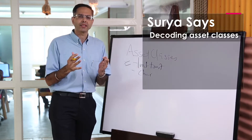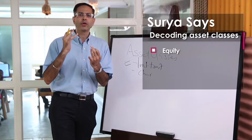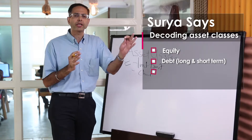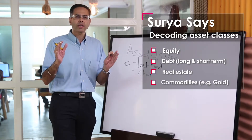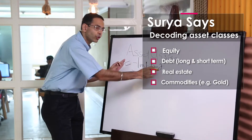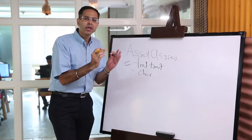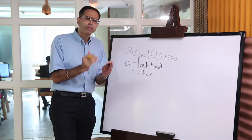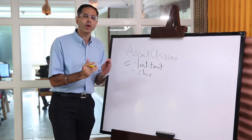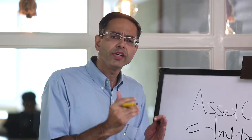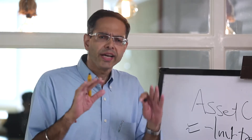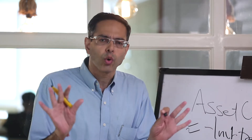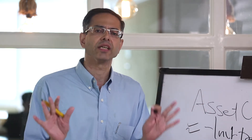So what are those asset classes? It could be equity, it could be debt. Within debt, you can actually further divide into short term and long term bonds, because the characteristics and traits are somewhat different for a short term and long term bond. Besides that, you can even count real estate as one of the asset classes. You can even include commodities — in Indian parlance, commodities simply can include gold for a simple investor like you.